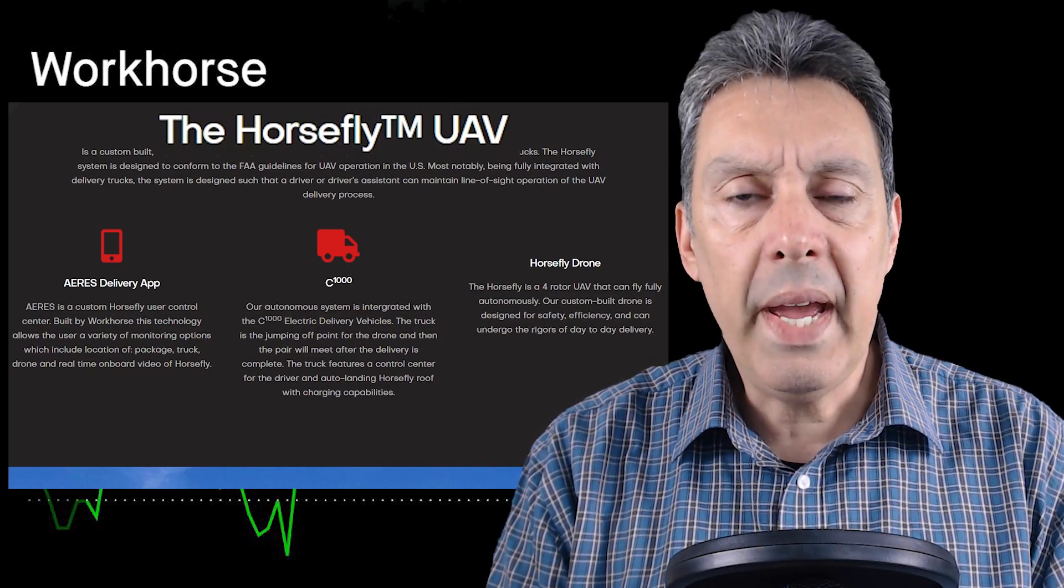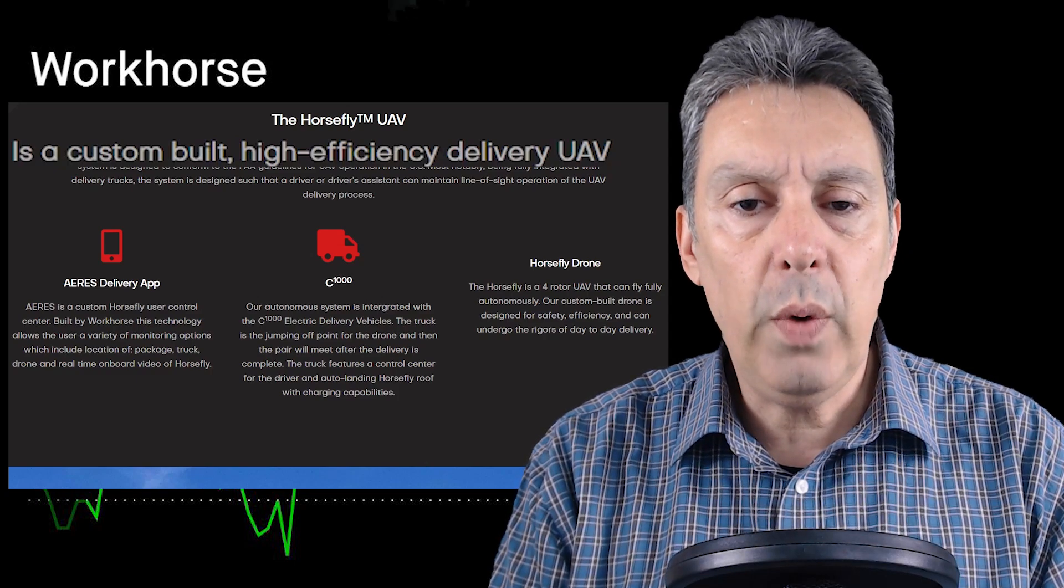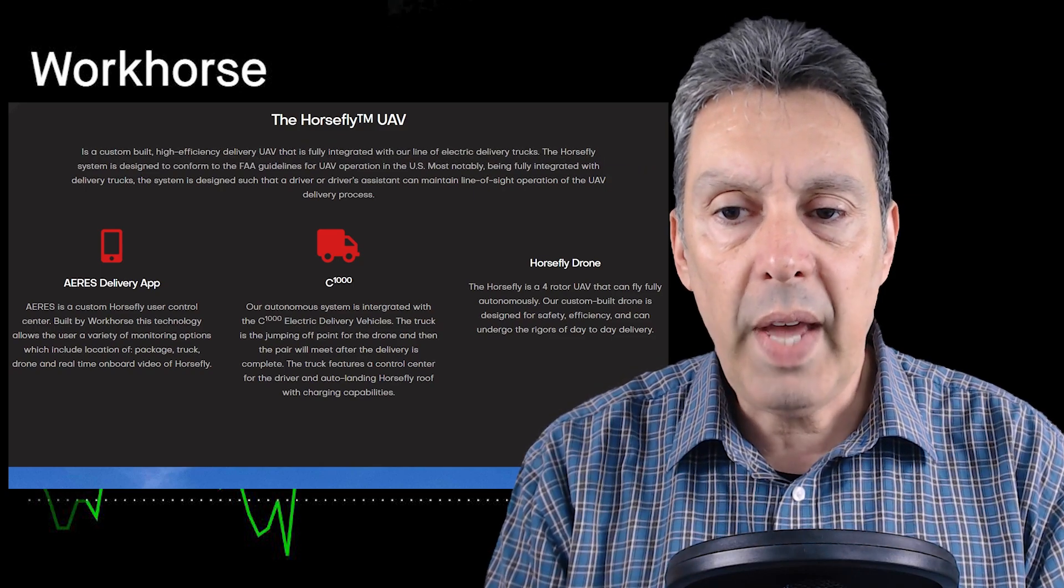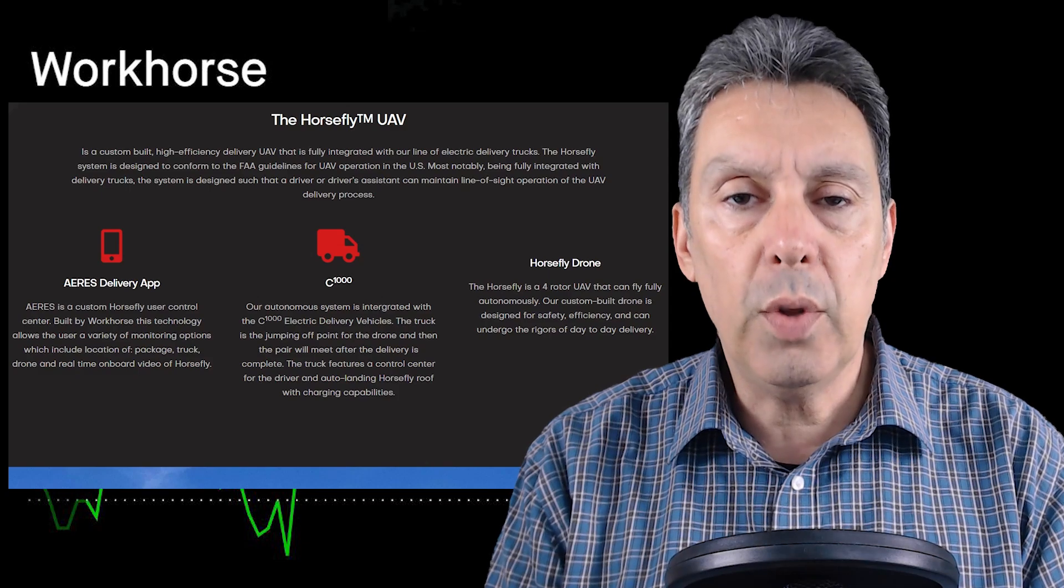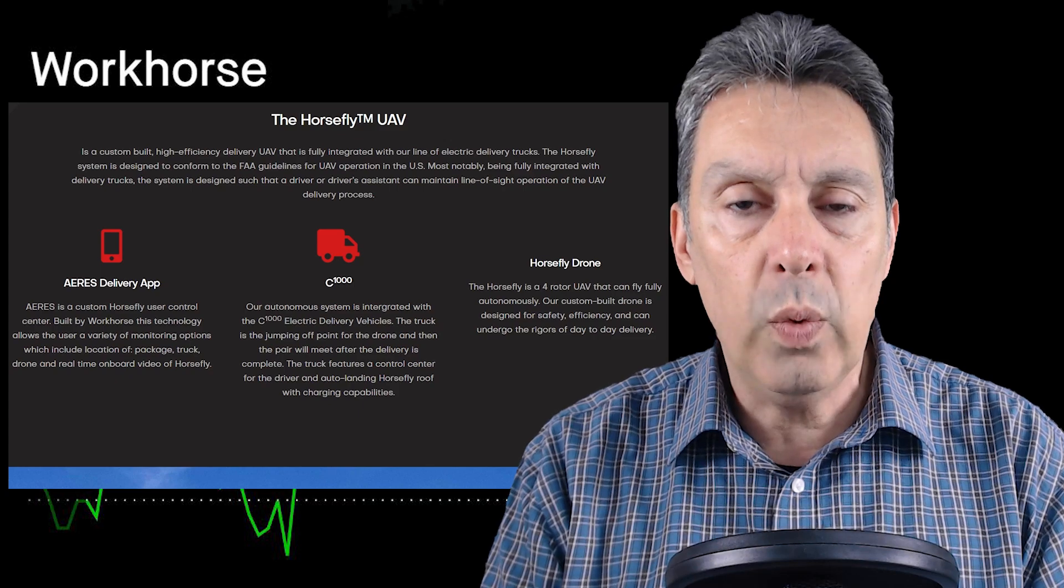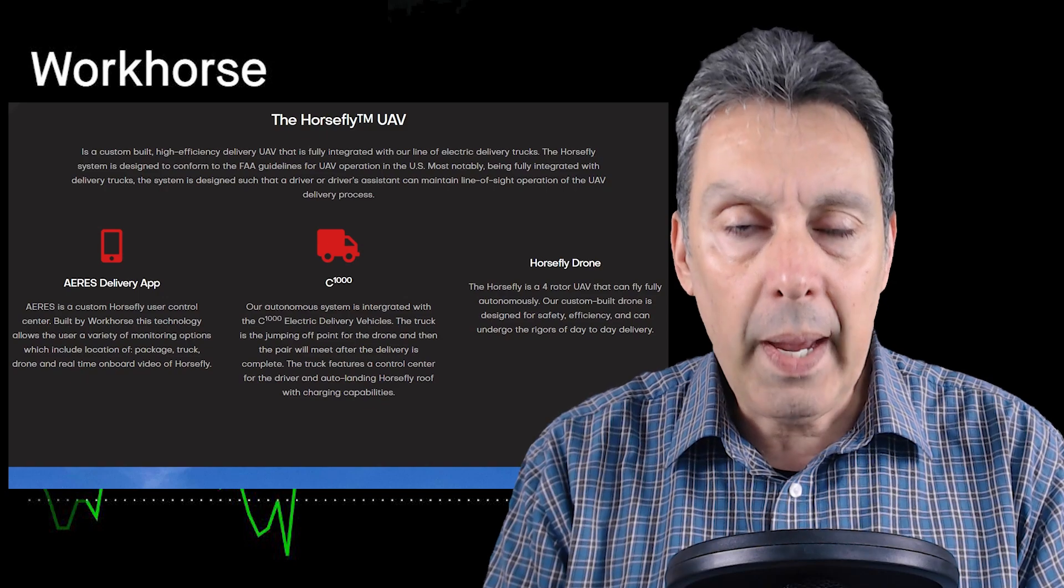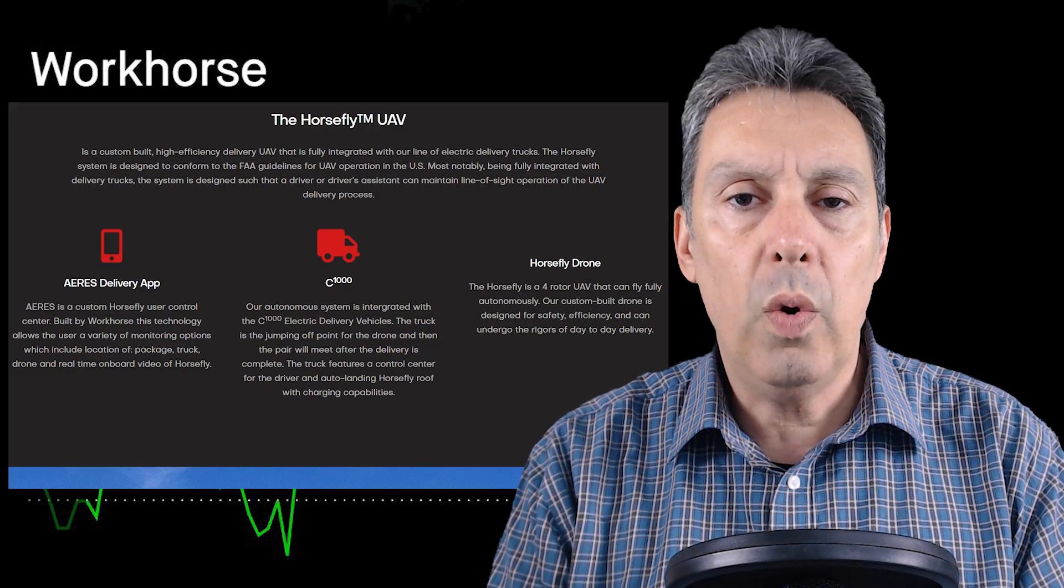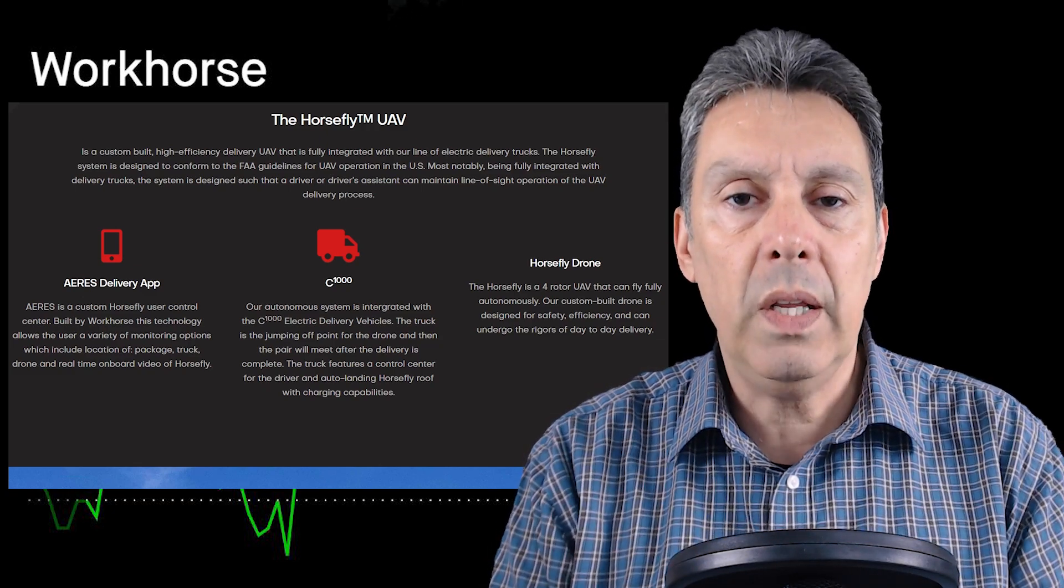Okay, the Horsefly Unmanned Aerial Vehicle, UAV. It's a custom-built, high-efficiency delivery UAV that is fully integrated with our line of electric delivery trucks. So that is crucial. This is an entire system. So they're providing the drone, they're providing the delivery truck, they're integrating that with hardware and software so that the packages can be monitored by them. The packages can also be monitored by the customers that they're being delivered to. So this is a turnkey solution.